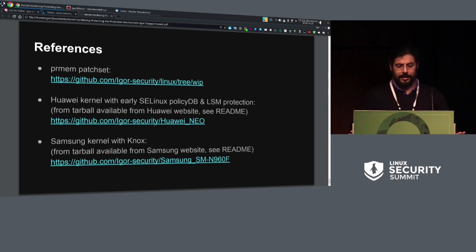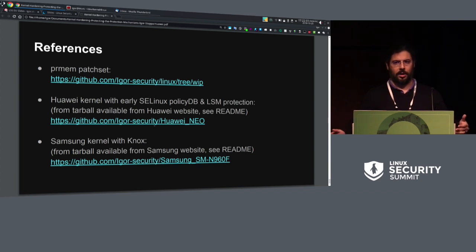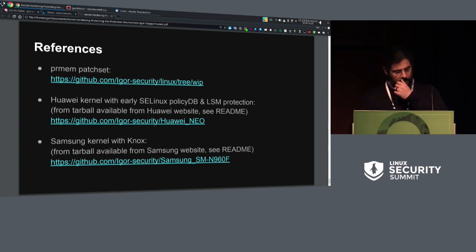What I sent to the mailing list is a bit less ugly. For your convenience, what were just one huge tar ball — I have downloaded the publicly available source code from Huawei and from Samsung and put it on GitHub. You can see there some of the things I mentioned. If you really want to see how we are protecting SELinux now you can see there, and you can also see the LSM protection from Samsung. That's all — questions?